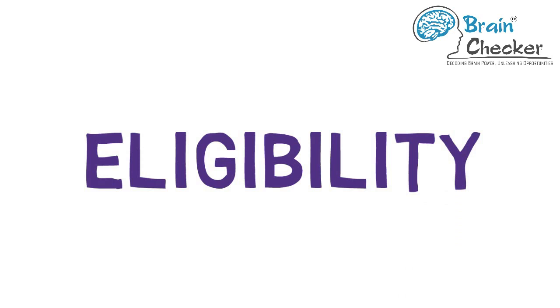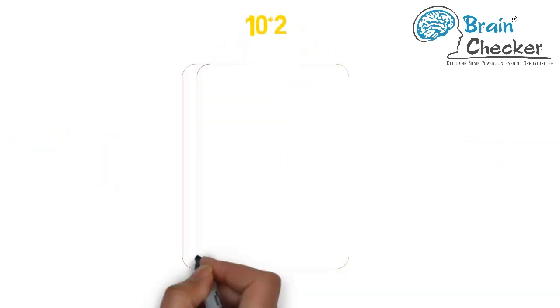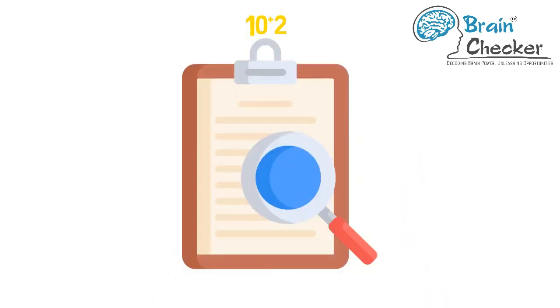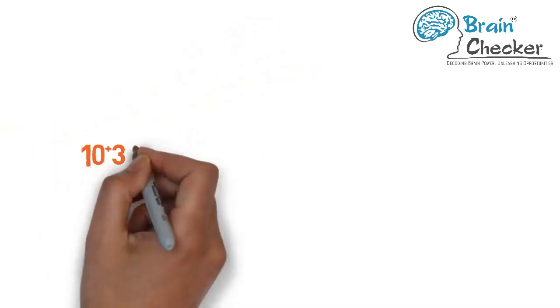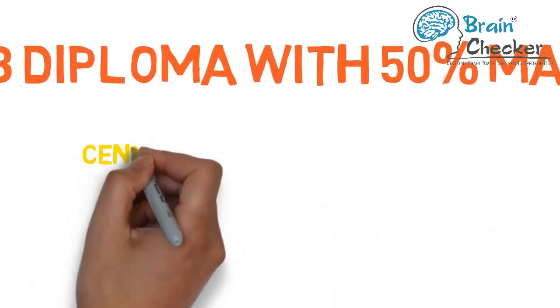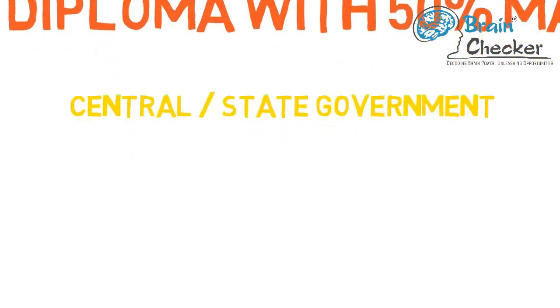Now let's go to eligibility. The minimum academic qualification for admission through NATA is a pass in the final examination of 10 plus 2 or its equivalent. Those appearing in 10 plus 2 or equivalent examination may also appear in NATA aptitude test. Candidates who have passed 10 plus 3 diploma with 50 percent marks in aggregate in any stream from central or state government are also eligible to apply for NATA.